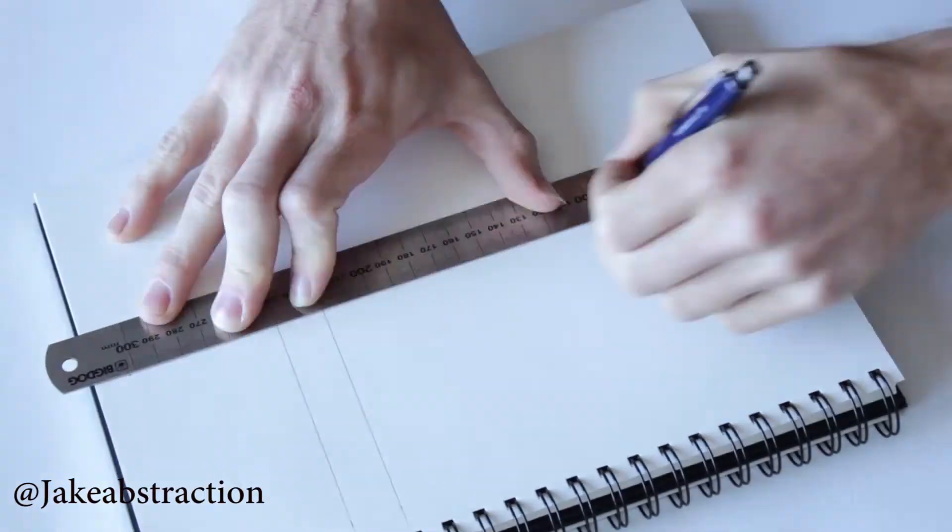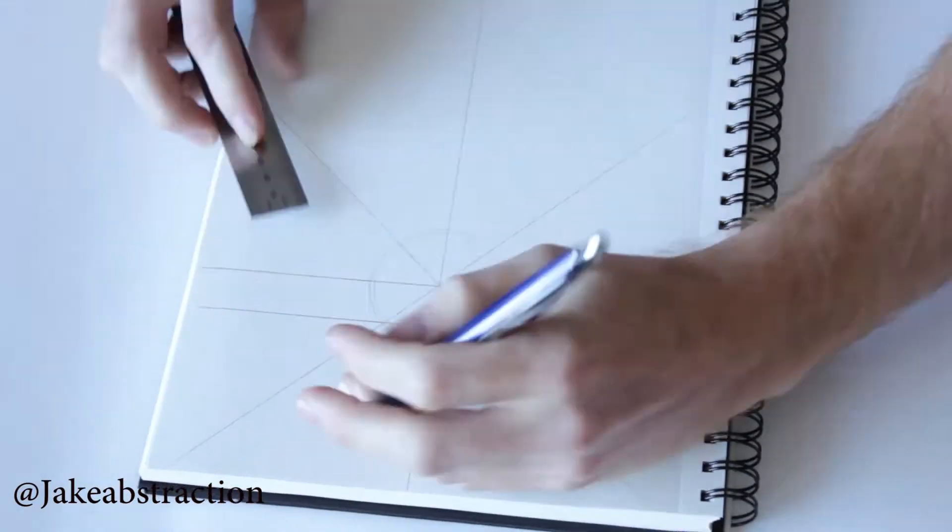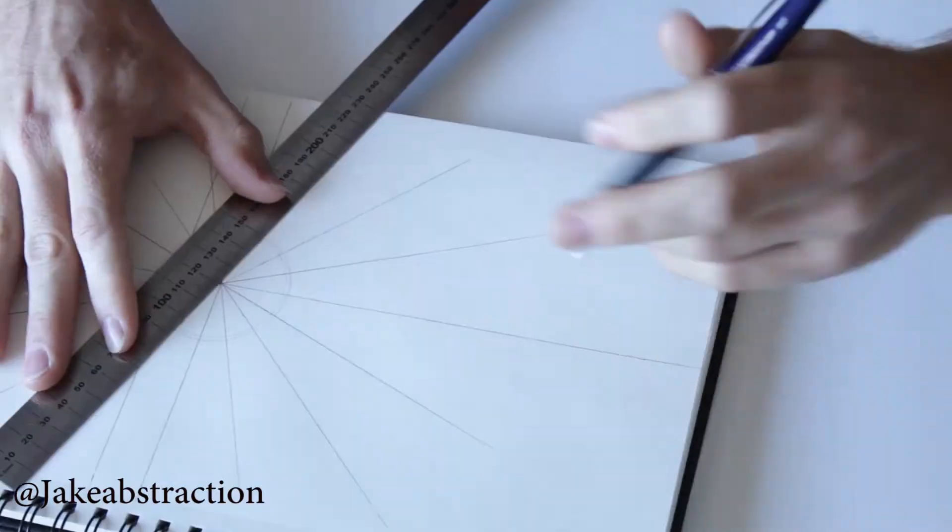Hi, my name is Jake Gerstle from Abstraction Art. I've been working on dot work in particular for the last two years.